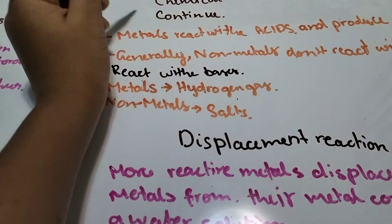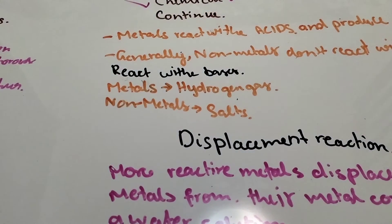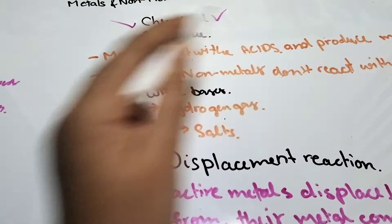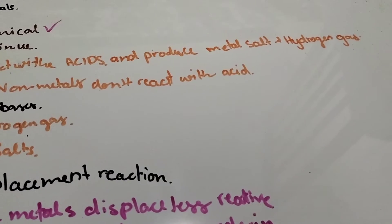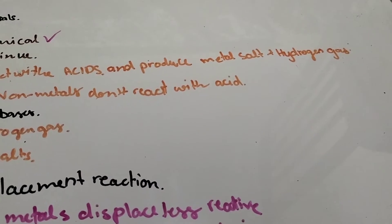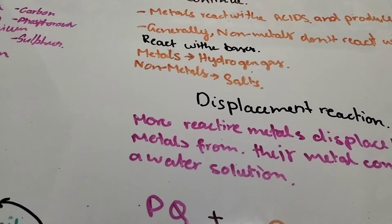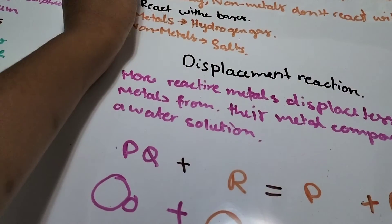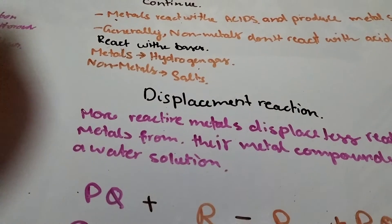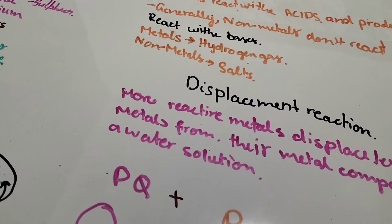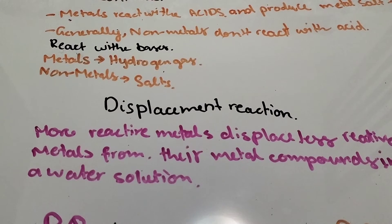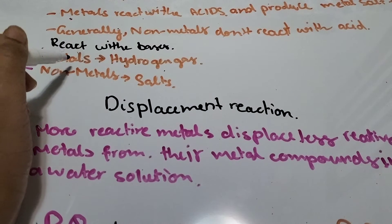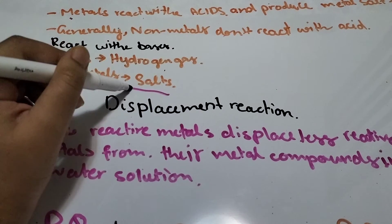More chemical properties: metals react with acids and produce metal salt plus hydrogen gas. Generally, non-metals don't react with acids. When reacting with bases, metals form hydrogen gas, while non-metals form salts.